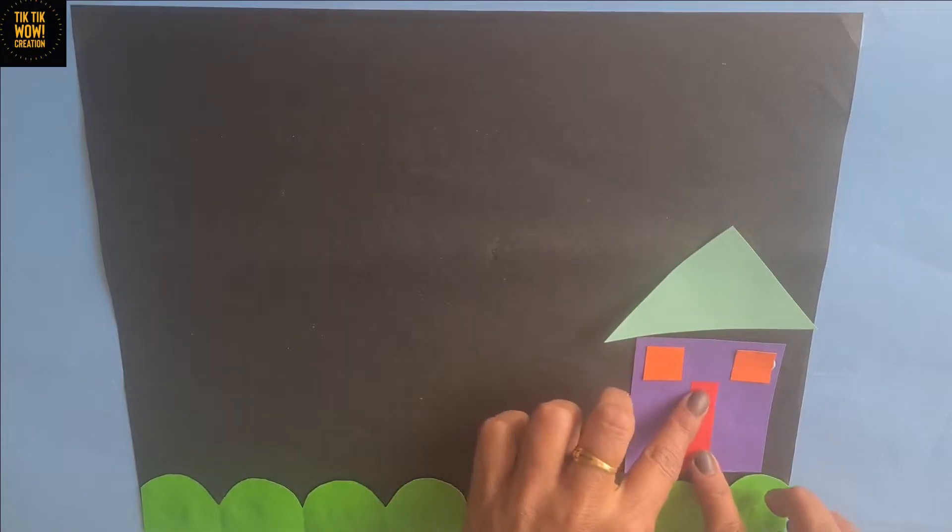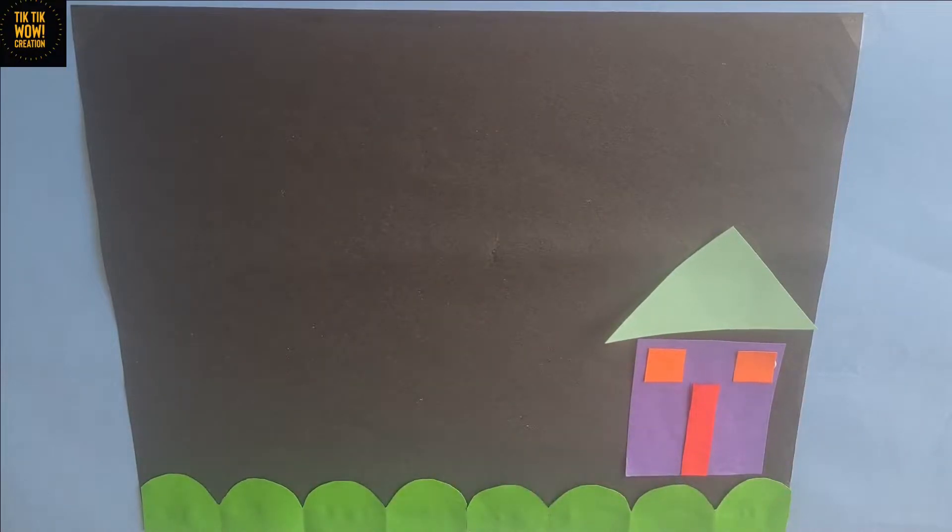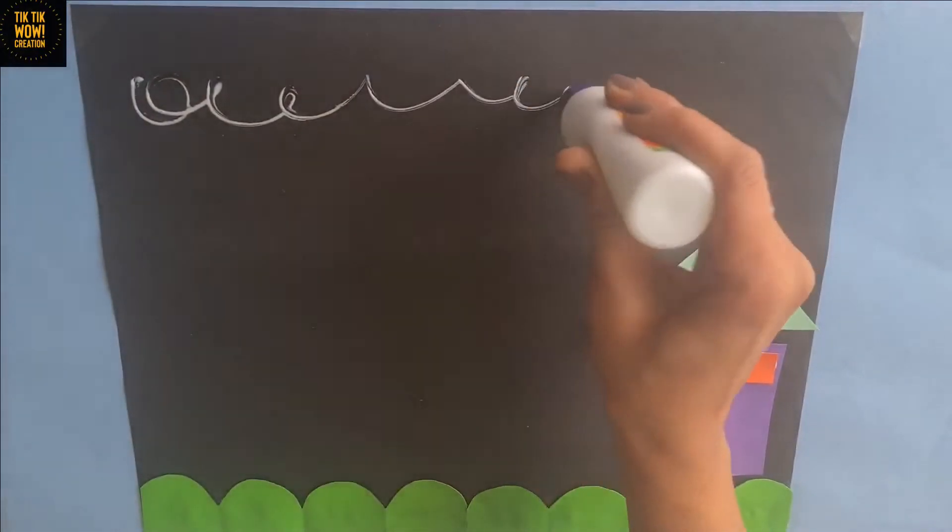Now these two orange squares for window and orange rectangle for the door of the house. Our house is ready.